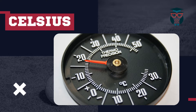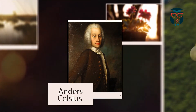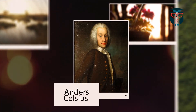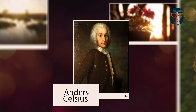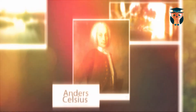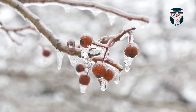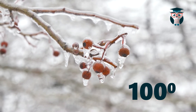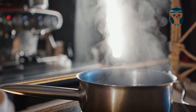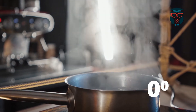Celsius. The Celsius scale, or in other words centigrade, was introduced by an astronomer, physicist, and mathematician, Anders Celsius, in 1742. What he did was he took the temperature as 100 degrees when pure ice melts into liquid water, and 0 degrees when water vaporizes to steam.